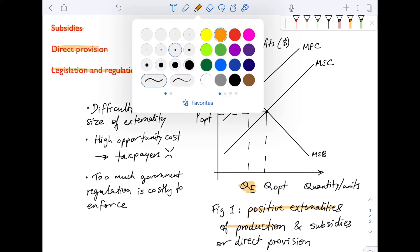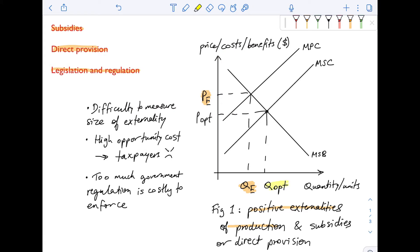But the market should be providing Qopt. This is what it should be and this is the optimum price, Popt.